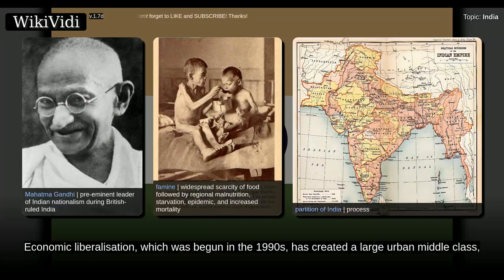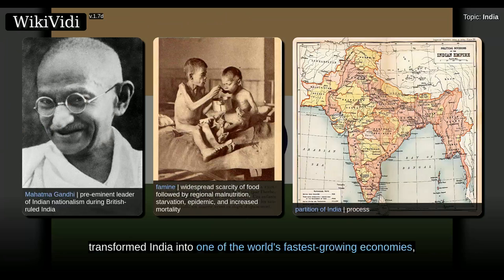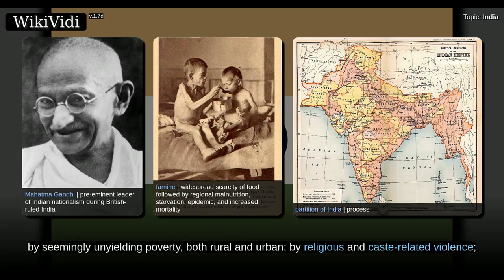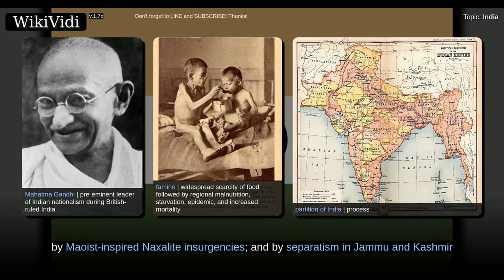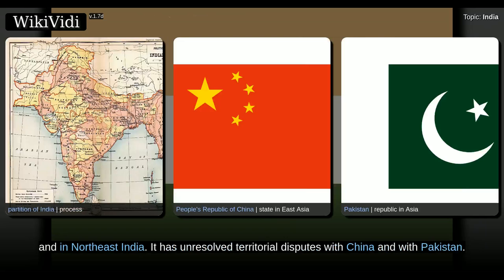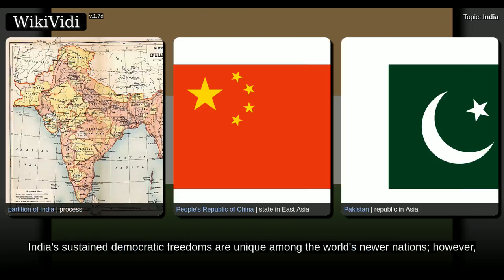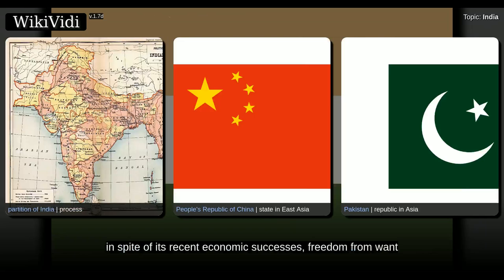Economic liberalization, which was begun in the 1990s, has created a large urban middle class, transformed India into one of the world's fastest-growing economies, and increased its geopolitical clout. Indian movies, music, and spiritual teachings play an increasing role in global culture. Yet India is also shaped by seemingly unyielding poverty, both rural and urban, by religious and caste-related violence, by Maoist-inspired Naxalite insurgencies, and by separatism in Jammu and Kashmir and in northeast India. It has unresolved territorial disputes with China and with Pakistan, and the India-Pakistan nuclear rivalry came to a head in 1998. India's sustained democratic freedoms are unique among the world's newer nations, though freedom from want for its disadvantaged population remains a goal yet to be achieved.